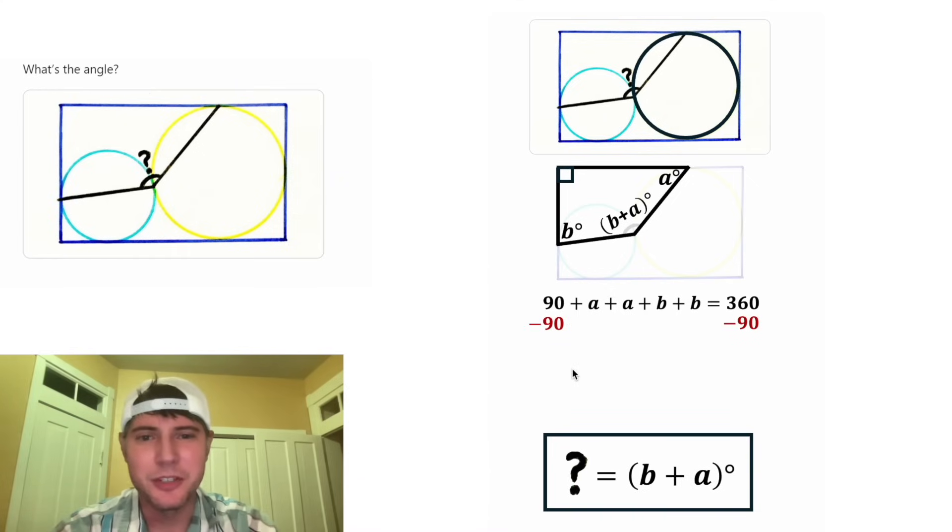Then let's subtract 90 from both sides. On the left-hand side, these are gone. A plus A is 2A. B plus B is 2B. And then on the right-hand side, 360 minus 90 is 270.